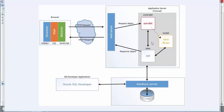Now we're going to work on the MVC design pattern of our application. We're going to make a model, which will be a Java class, that will correspond to the database table 'friends'. So it has a property for every database field.